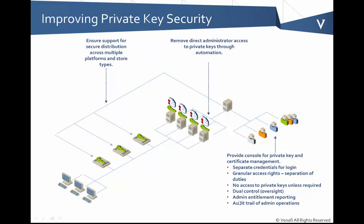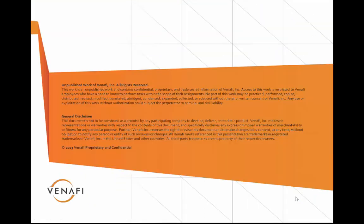Once you've taken this approach, now you can do entitlement reporting. In addition, if you implement a system that does full logging of all operations, now you've got a full audit trail of everything that they've done. So you can run a report that shows all the entitlements — who has access to what, what access they have, and what operations they've performed. Hopefully this gives you some idea of how you can improve the security of your private keys after you've had a chance to go in and see how your groups are currently managing those private keys. We hope you've enjoyed this session and look forward to seeing you in another one. Thanks a bunch. Bye-bye.